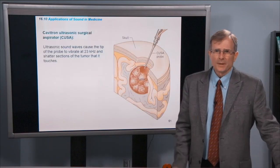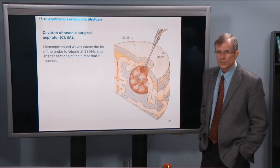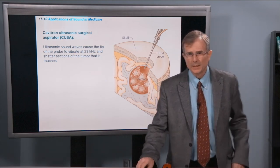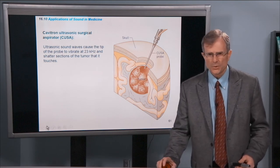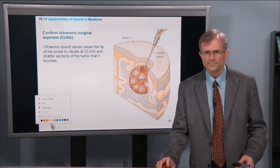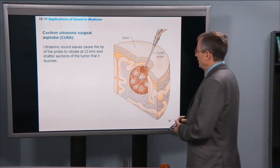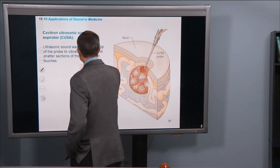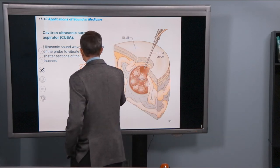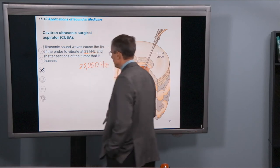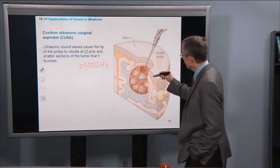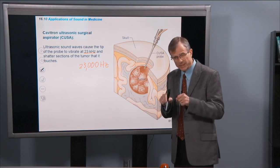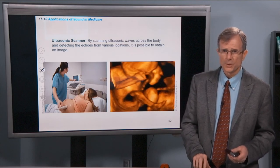So the Cavitron Ultrasonic Surgical Aspirator. Sound is used, ultrasonic sound, what does ultra mean? Ultra means that it's above the audible range. And this is 23 kilohertz, so kilo means thousand, so that's 23,000 hertz. That's well above the human audible range. And those probes are used to shatter sections of a tumor. So it's ultrasound, very high frequency sound used in medicine to destroy tumors.